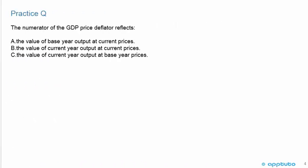We'll just do a quick practice question to check our understanding. The numerator of the GDP price deflator reflects: A, the value of base year output at current prices; B, the value of current year output at current prices; or C, the value of current year output at base year prices.